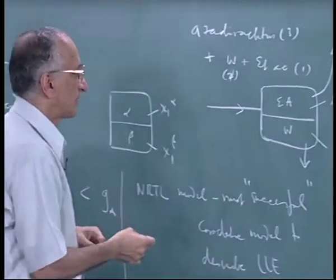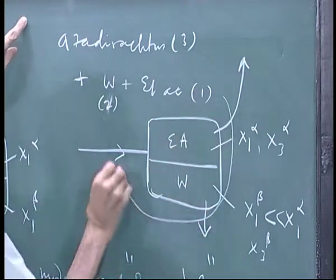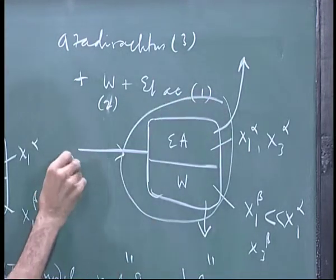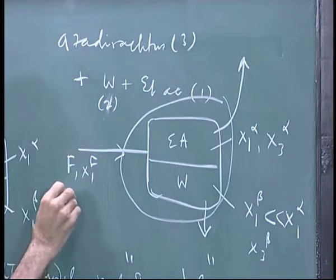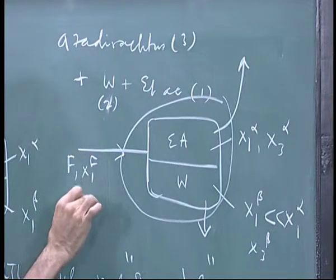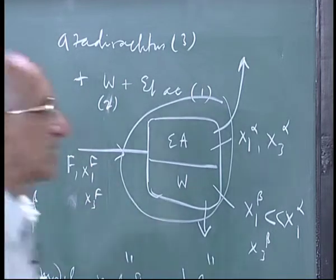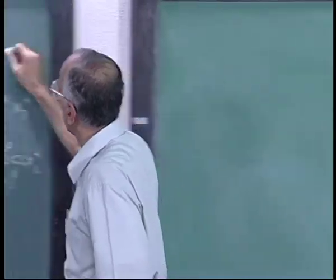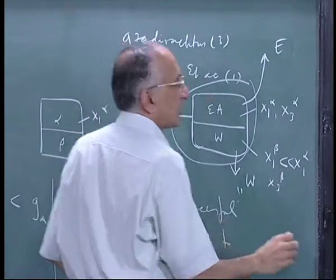You allow it to settle, you draw off the water phase and ethyl acetate phase. So if you draw a mass balance around this, if this is the feed with composition x1 f and x3 f, then all I have to do is write a mass balance around these three. This will be extract layer E and this is say the water layer.